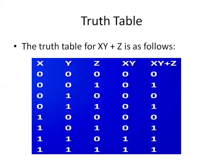The truth table of XY+Z — XY+Z is an expression. There are three variables: number one is X, second one is Y, and third one is Z. X and Y are ANDed, and XY is ORed with Z. With three variables, the possible combinations will be eight.